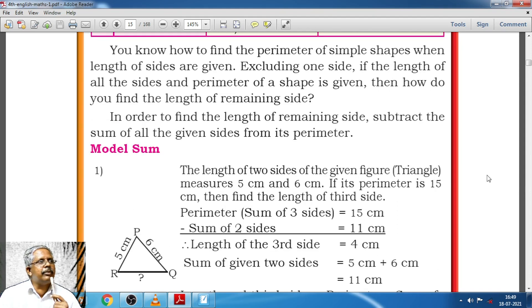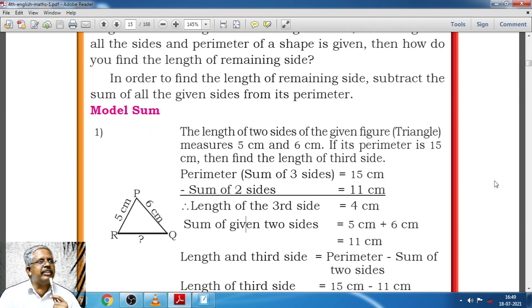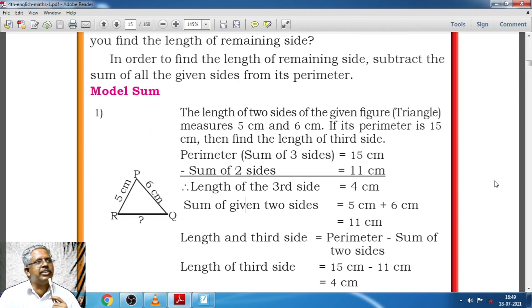I have a model problem here which talks about length of two sides of a given triangle which is measuring 5 cm and 6 cm and one unknown side. If that has to be learned, you see in order to find the length of remaining side, subtract the sum of all the given sides from its perimeter.